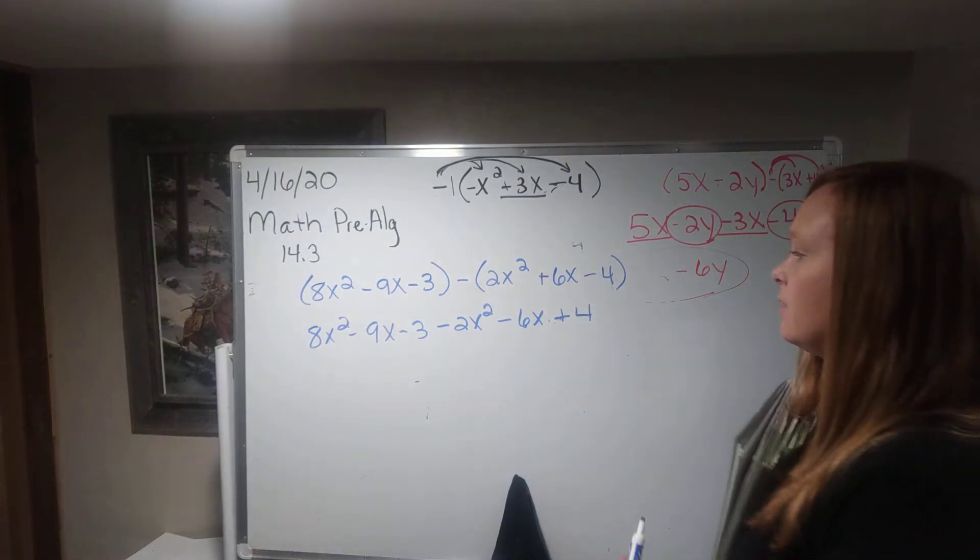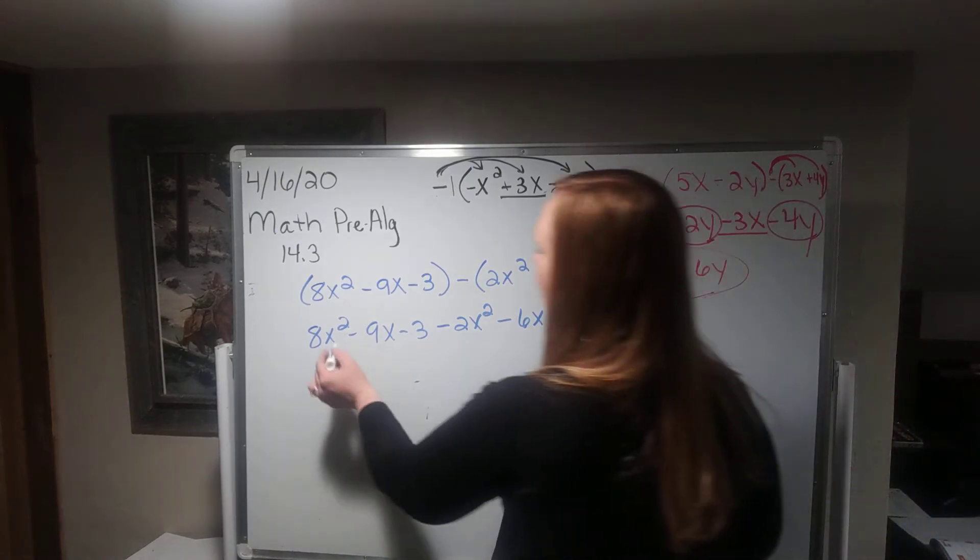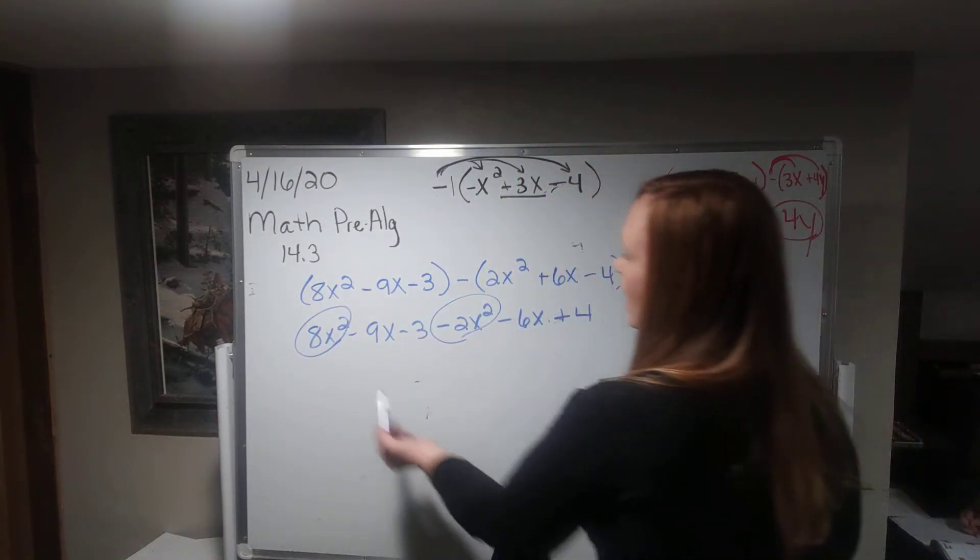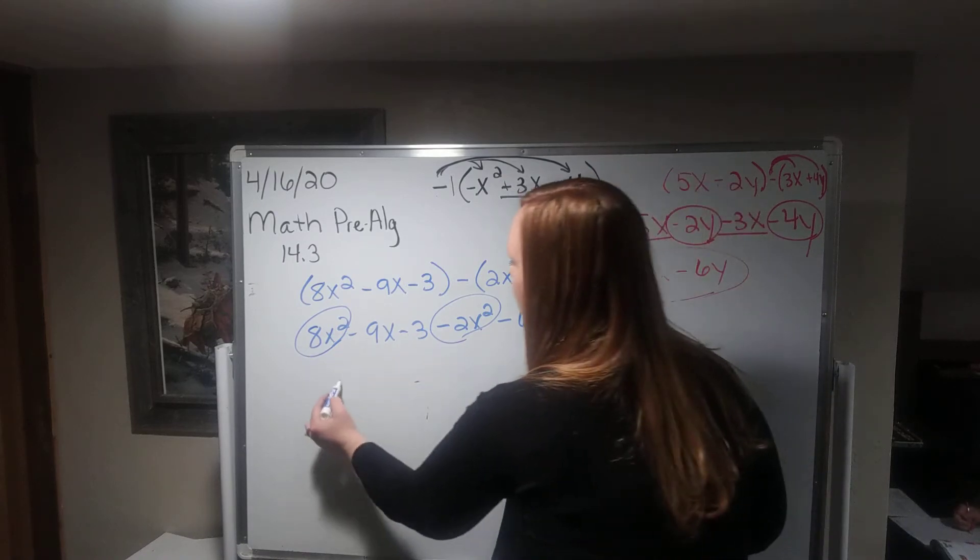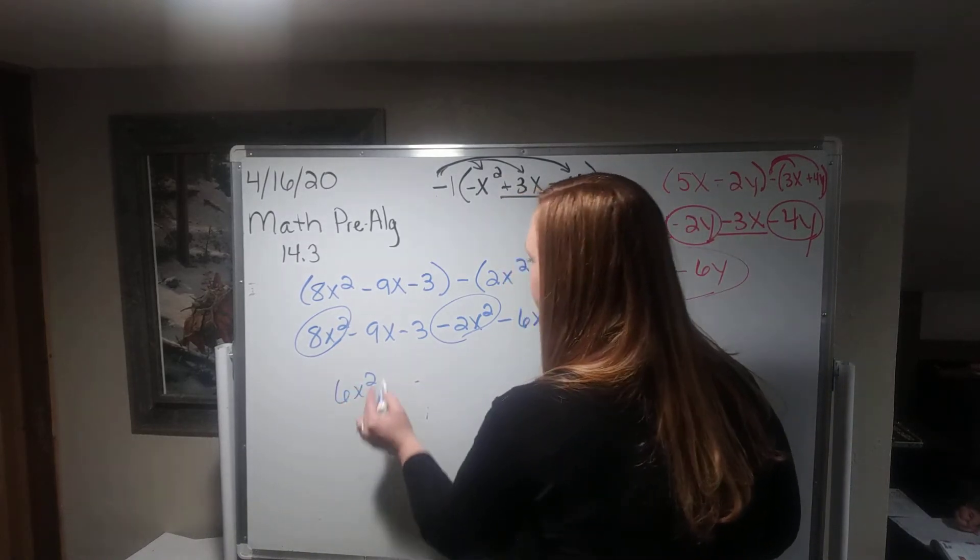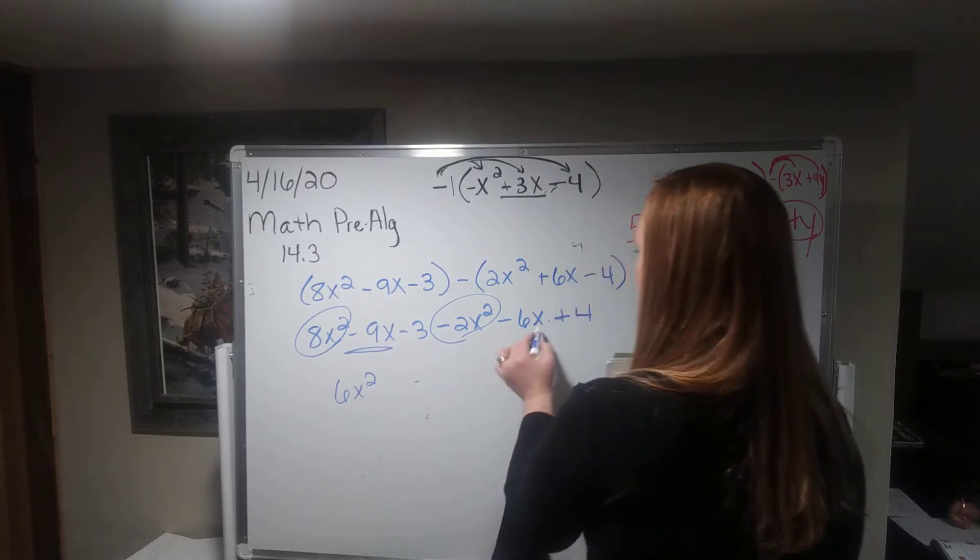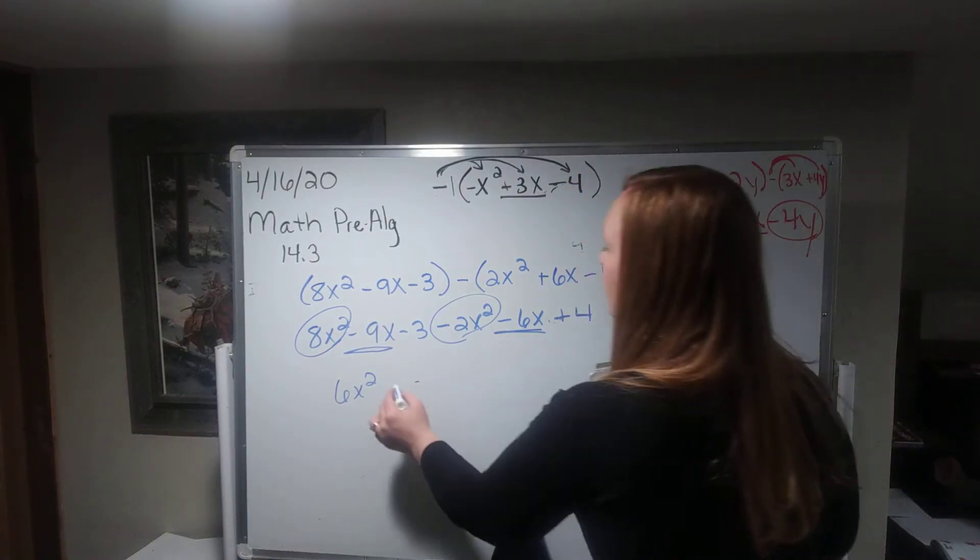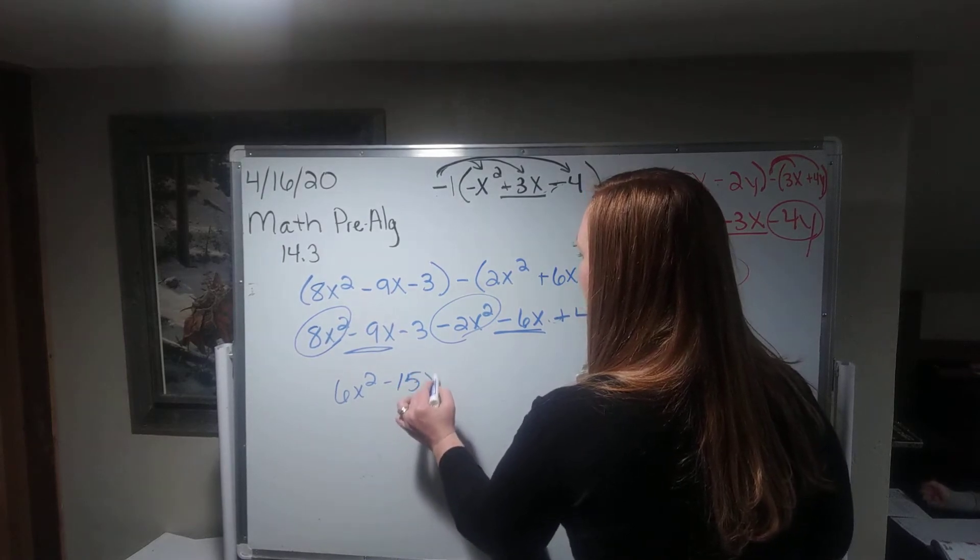Okay, now I need to find my like terms. I'm going to start with my x squared. My x squared. So I have 8 minus 2 is 6x squared. Now I'm going to combine my x's. They're both negatives, so I'm going to add them together. Negative 15x.